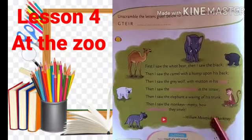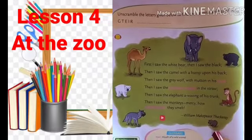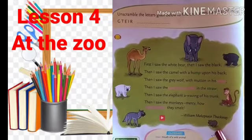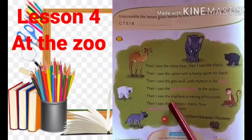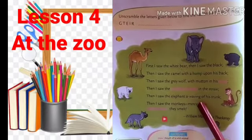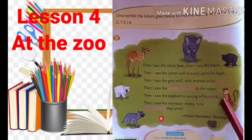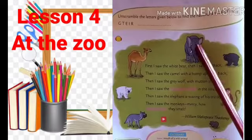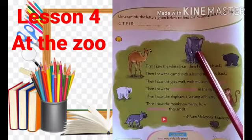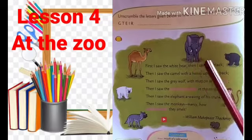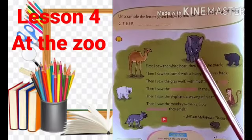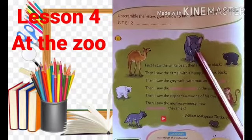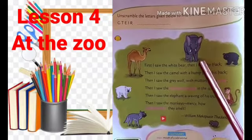Then I saw the elephant. What is there on the straw? Wombat. Wombat is also a small bear. Then I saw the elephant waving his trunk. Then he saw an elephant. What is this? An elephant. What is he waving? He is waving his trunk. This is called the trunk.